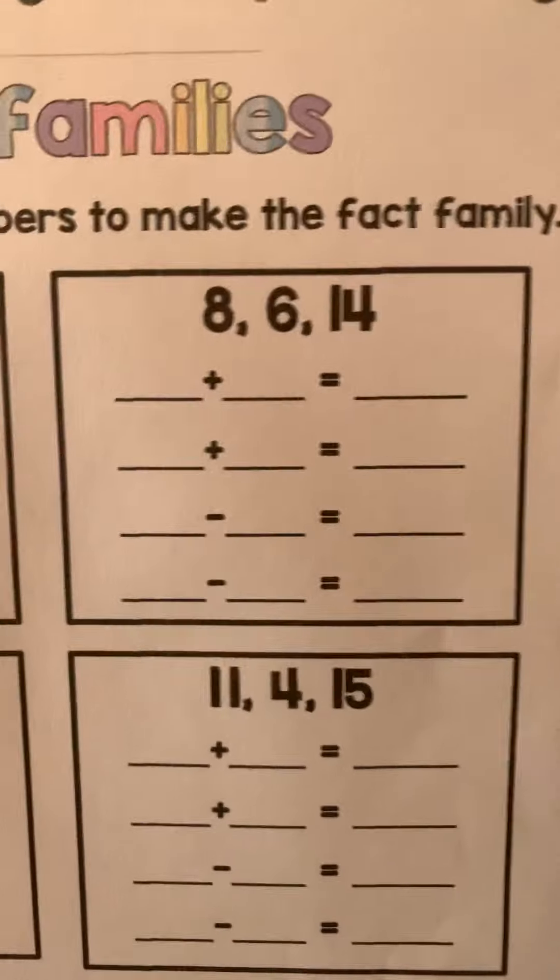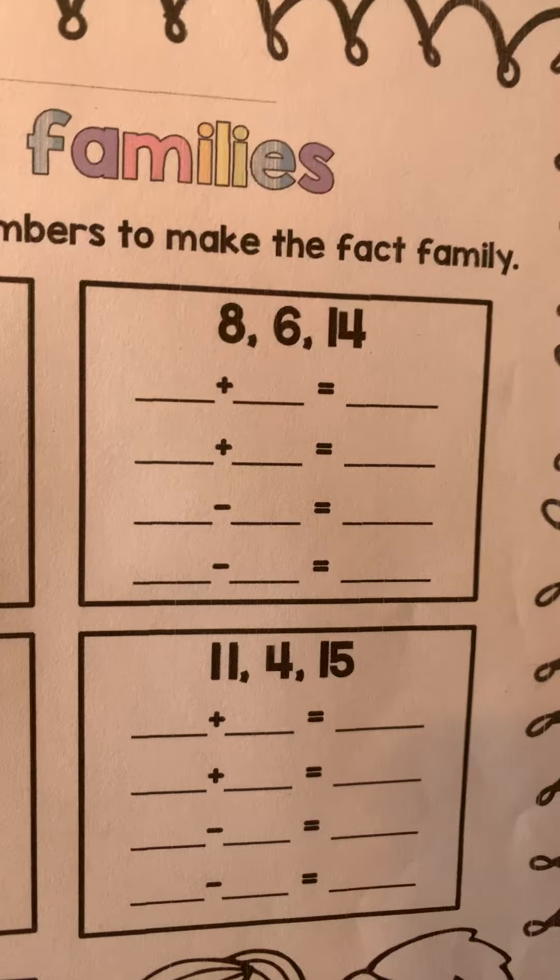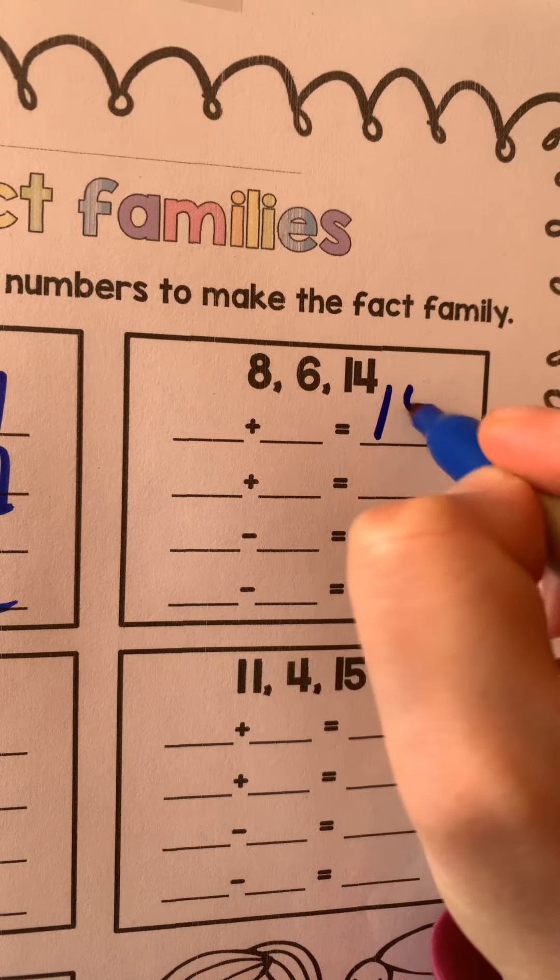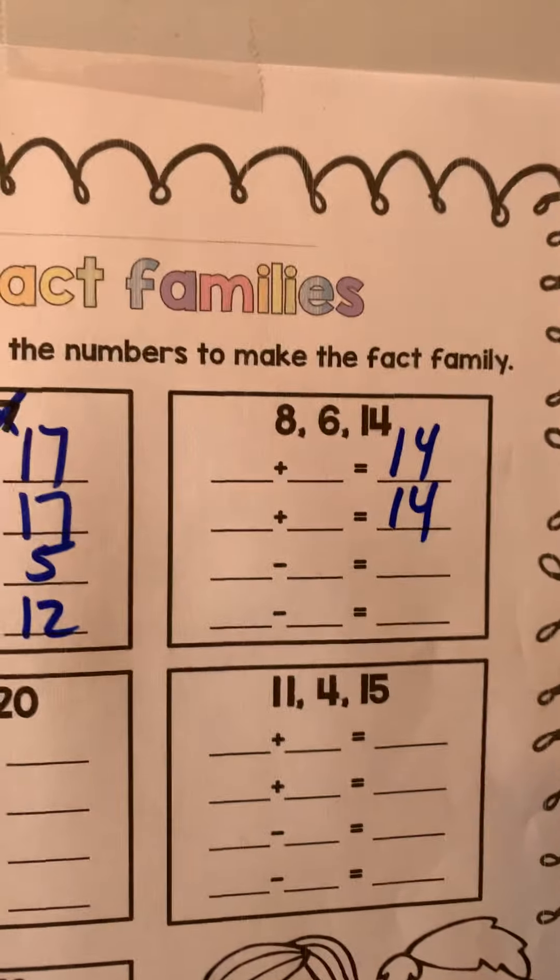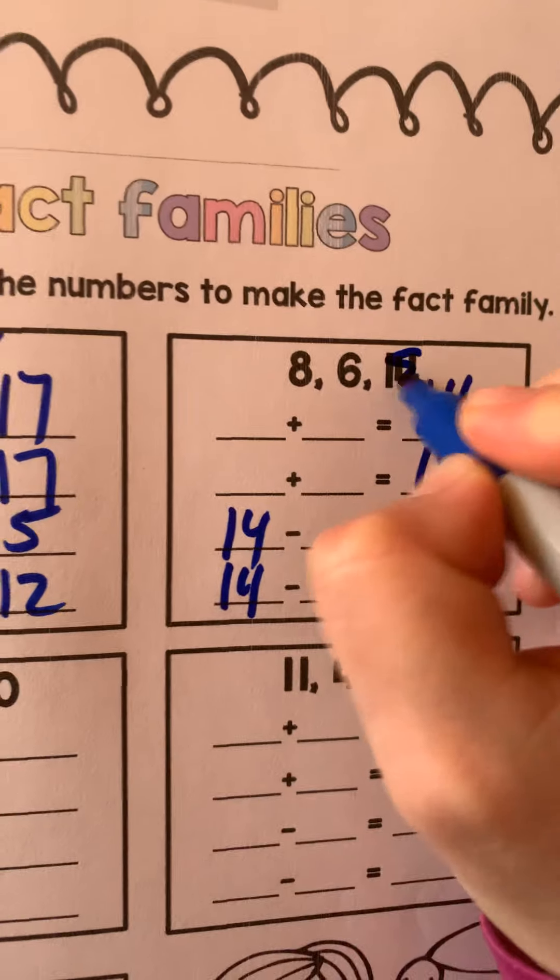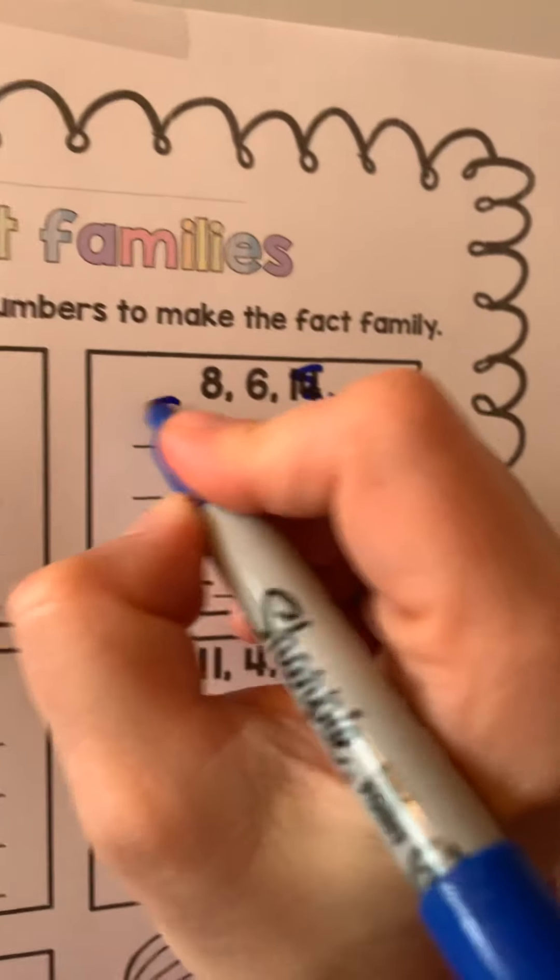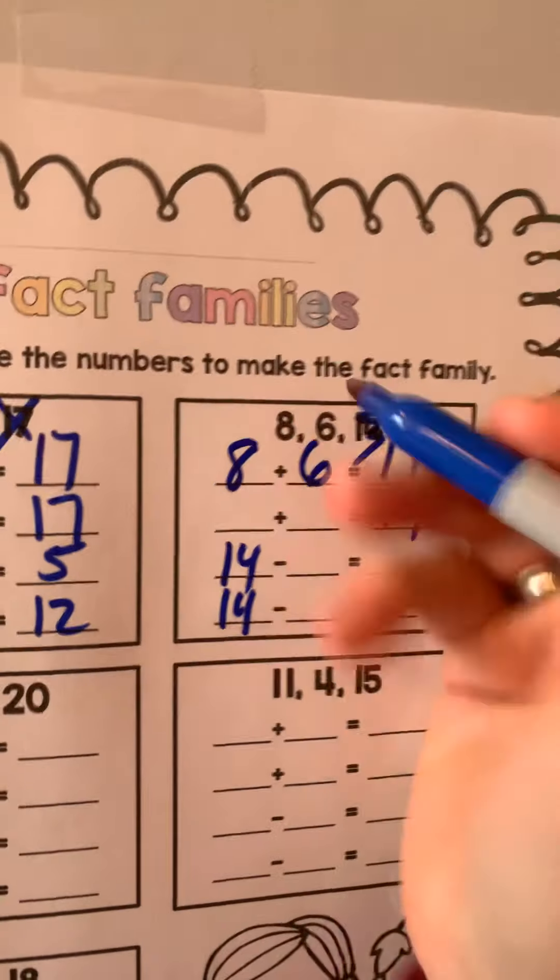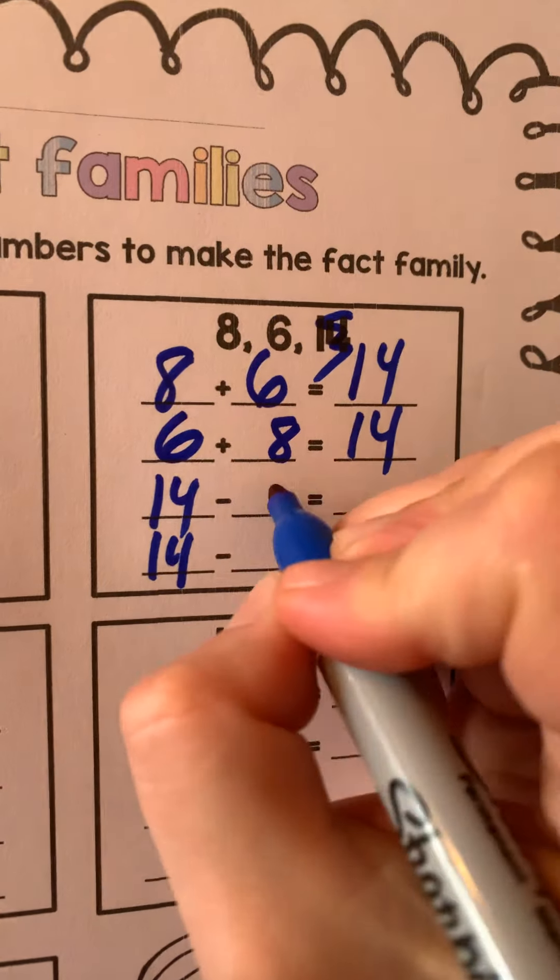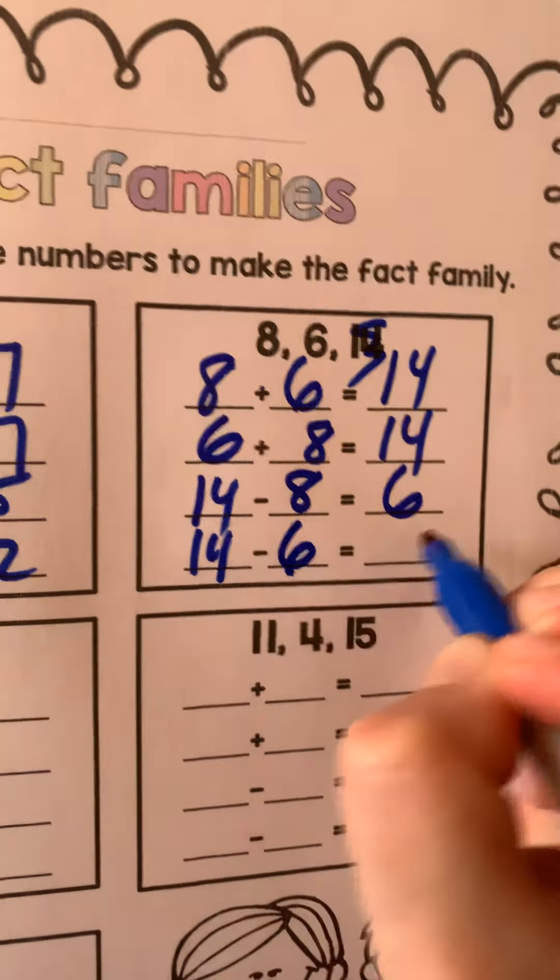Here we go. We have 8, 6, and 14. What are we going to use? We have addition ends with the biggest number, which is 14. Subtraction starts with the biggest number, and I heard Cairo say that, 14. And let's go ahead and use our two other ones. Ready? 8 plus 6 is 14. Flip it. 6 plus 8 is 14. Use the same numbers at the bottom. 14 minus 8 is 6. Don't forget to flip. Flip it. 14 minus 6 is 8.